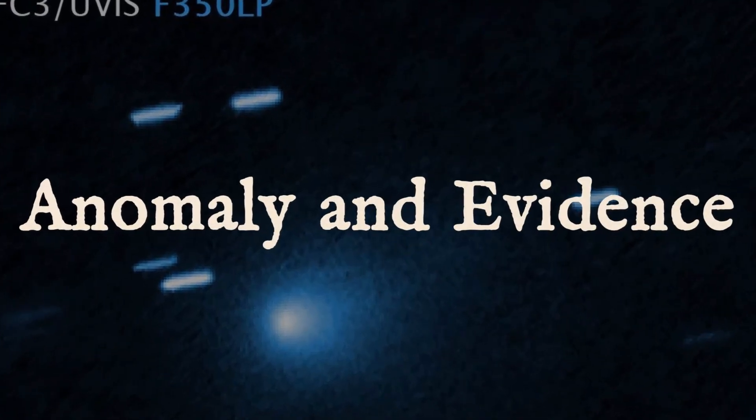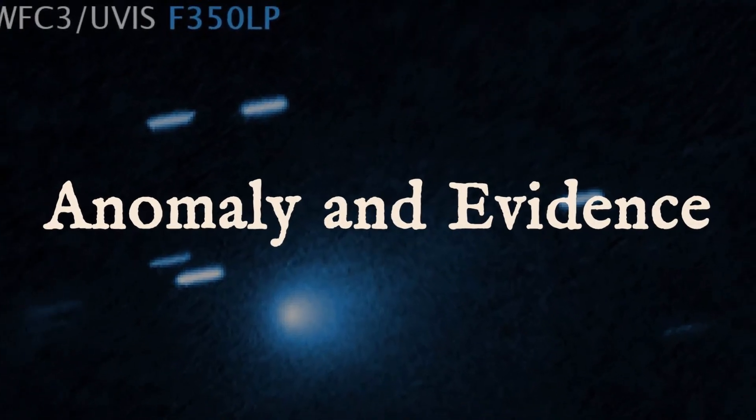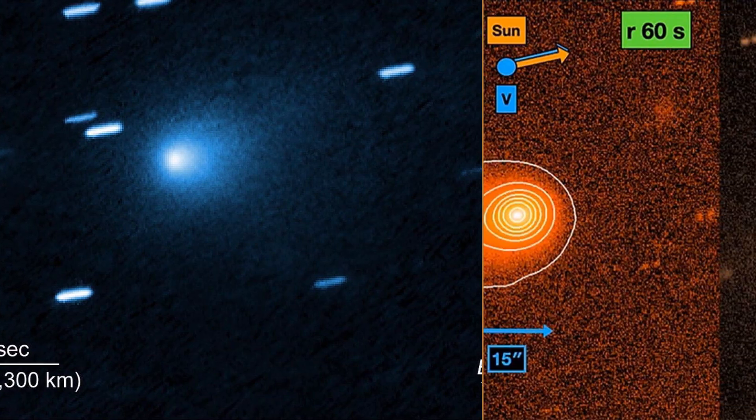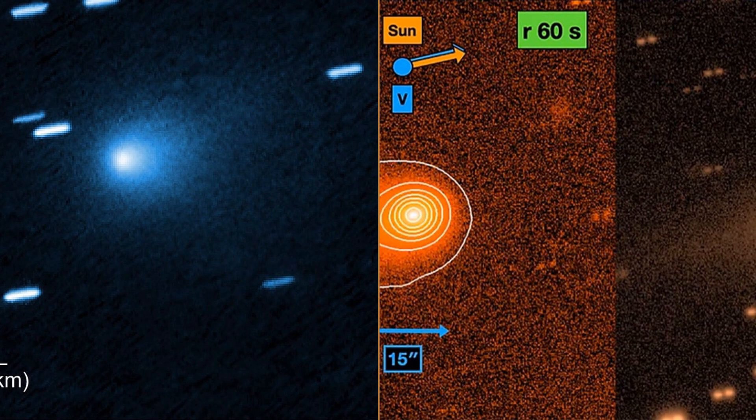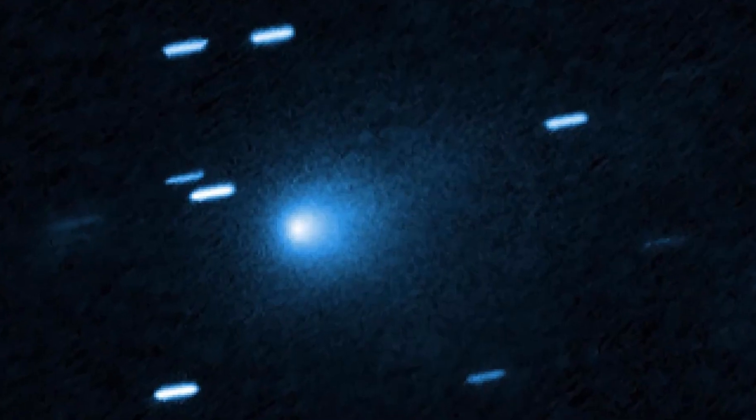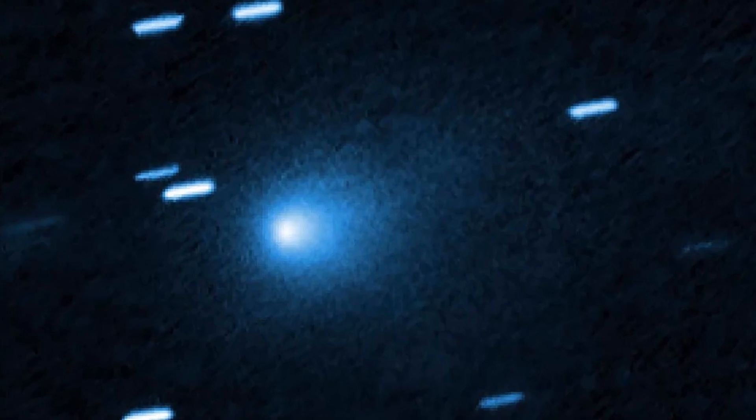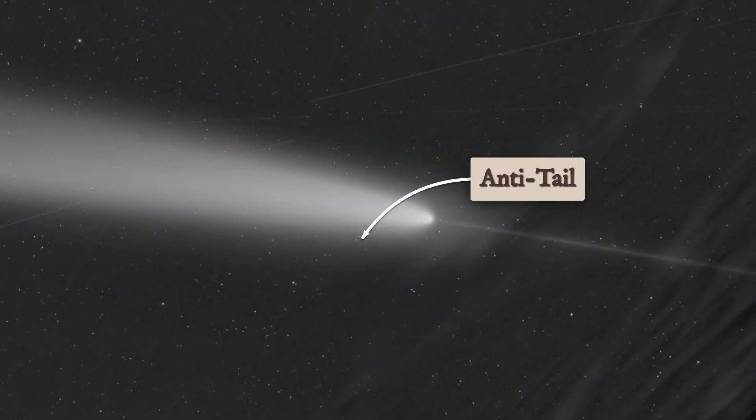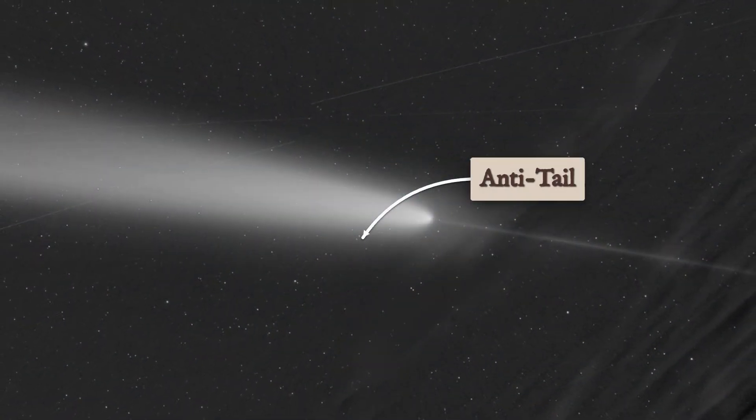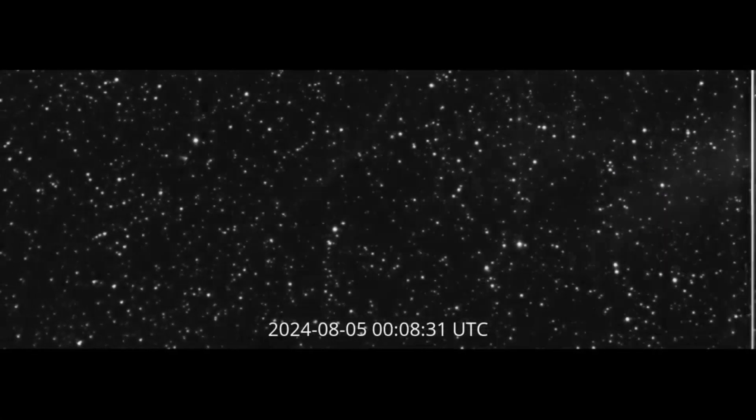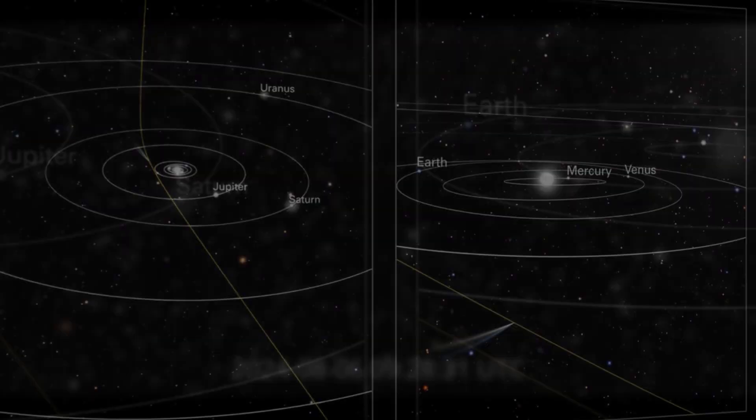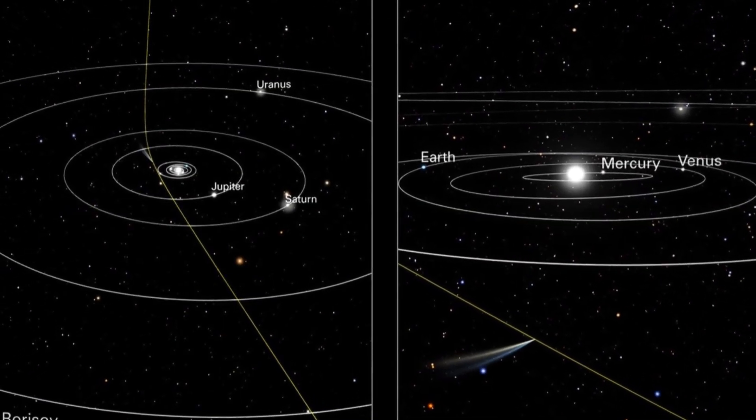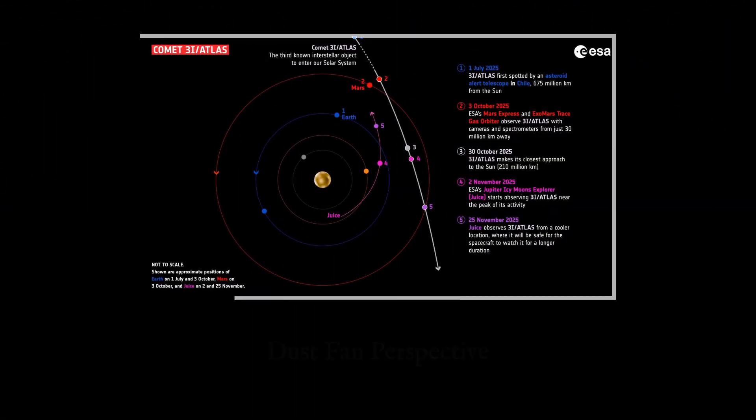An anti-tail is one of the strangest features you can spot on a comet. Instead of streaming away from the sun, like the classic image of a comet's tail, an anti-tail appears to point directly toward the sun. In photographs, it looks like a bright narrow spike jutting from the comet's head, aiming sunward, almost as if the comet is defying the forces that usually shape its appearance. This isn't a trick of the comet's behavior, but a result of how dust spreads out in space and how we view it from Earth.